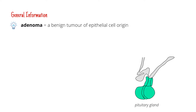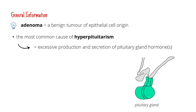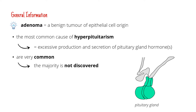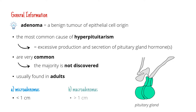Pituitary adenomas are the most common cause of hyperpituitarism, which is a condition when there's too much pituitary gland hormones. They are very common, although most of them don't get discovered throughout life. They're usually found in adults and can be divided into micro adenomas that are smaller than 1 cm and macro adenomas that are bigger than 1 cm.